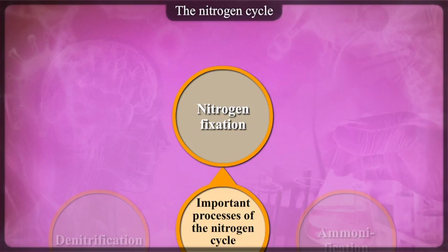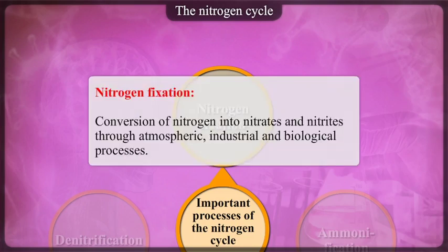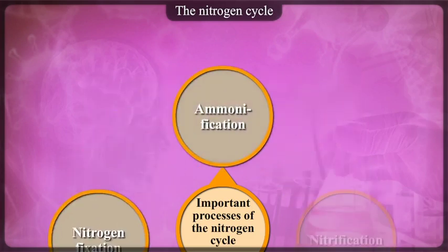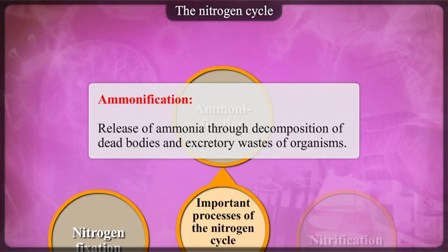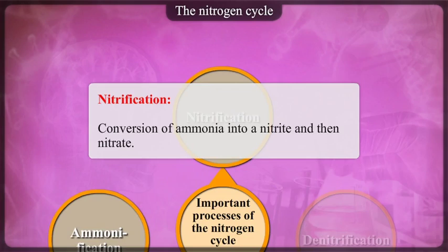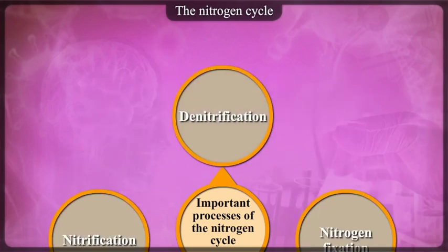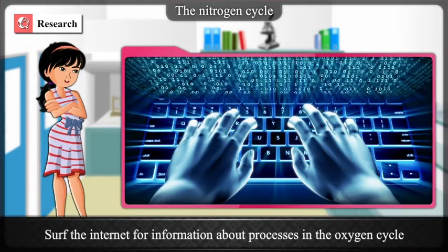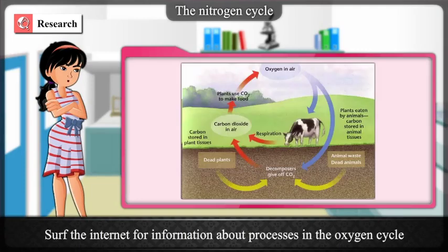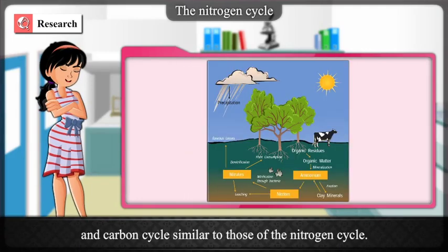Important processes of the nitrogen cycle: 1. Nitrogen fixation — conversion of nitrogen into nitrates and nitrites through atmospheric, industrial and biological processes. 2. Ammonification — release of ammonia through decomposition of dead bodies and excretory wastes of organisms. 3. Nitrification — conversion of ammonia into nitrite and then nitrate. 4. Denitrification — conversion of nitrogen compounds into gaseous nitrogen. Research: search the internet for information about the processes in the oxygen cycle and carbon cycle similar to those of the nitrogen cycle.